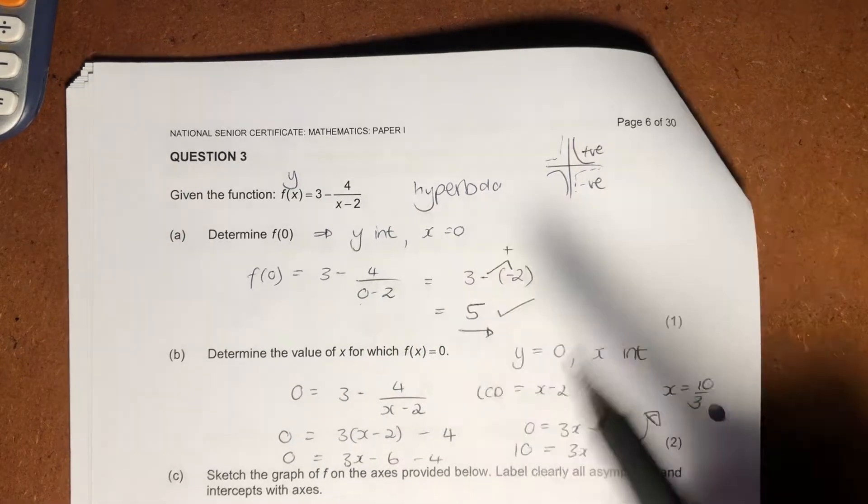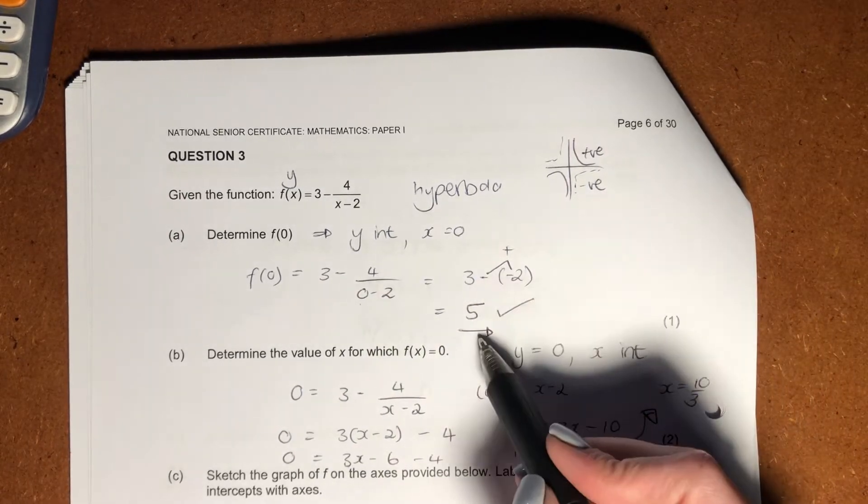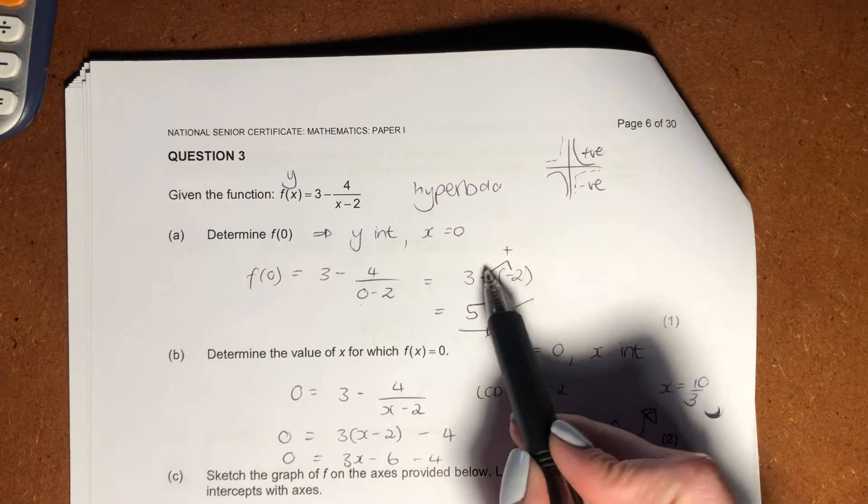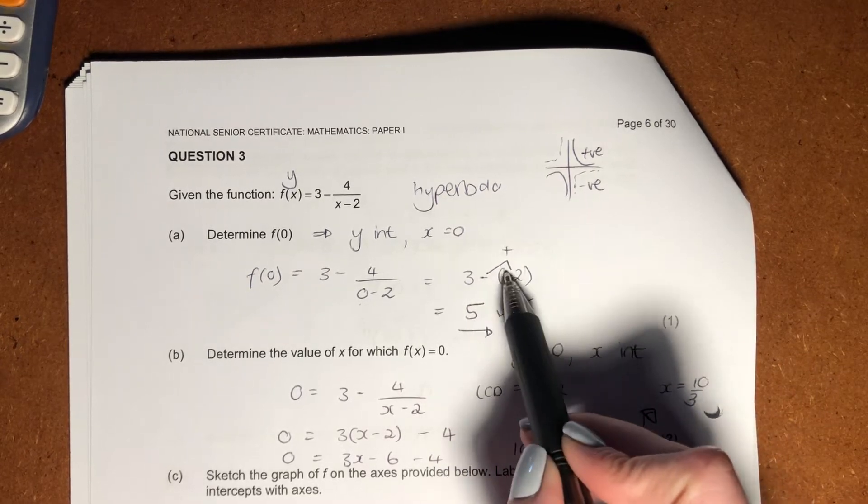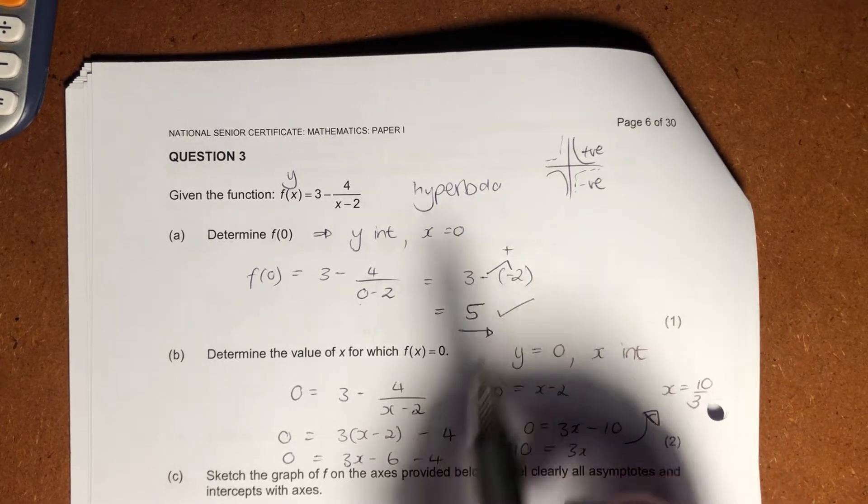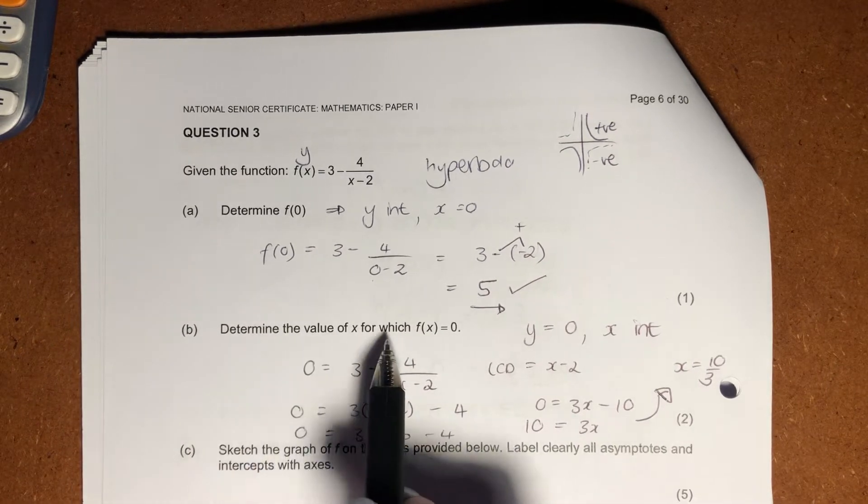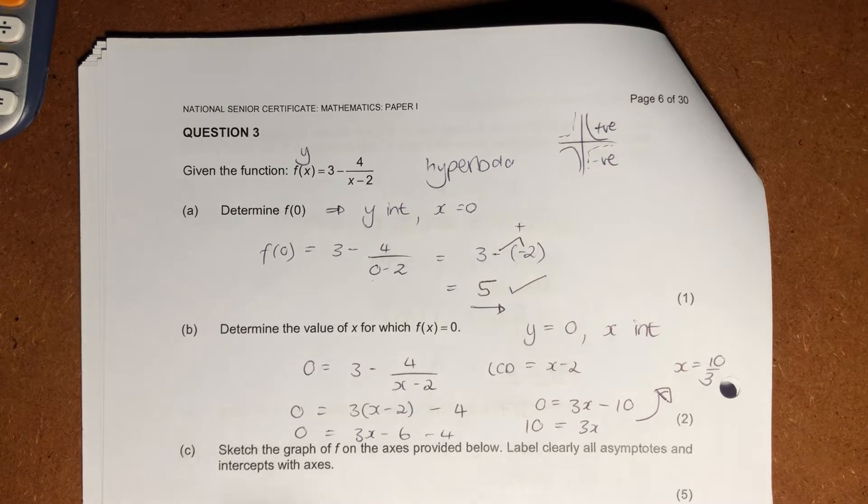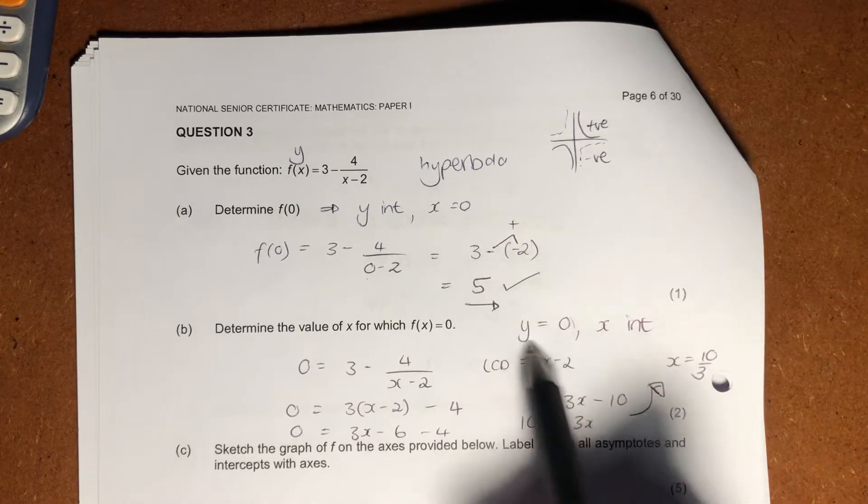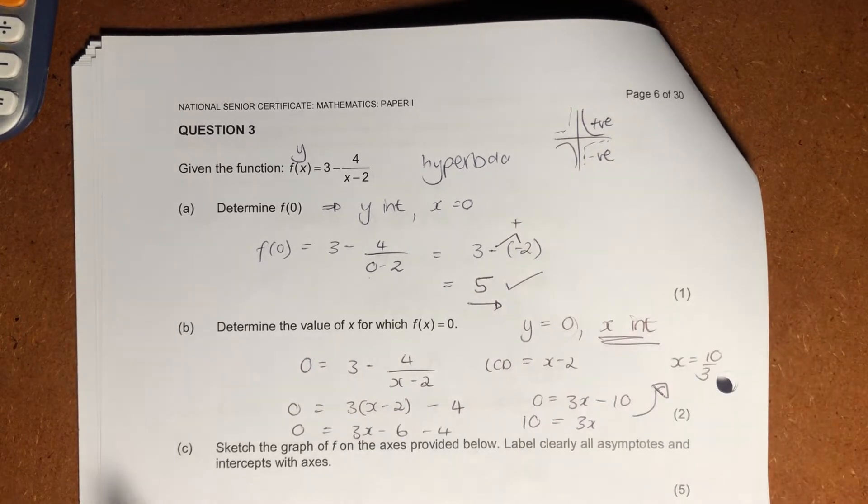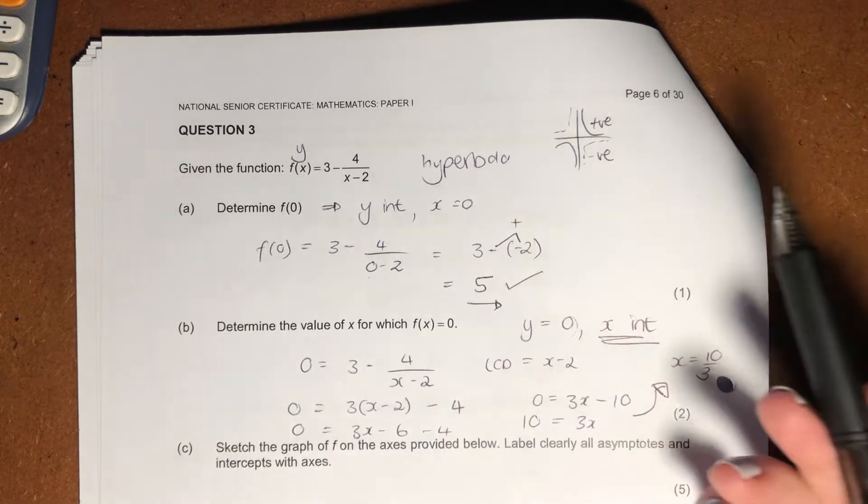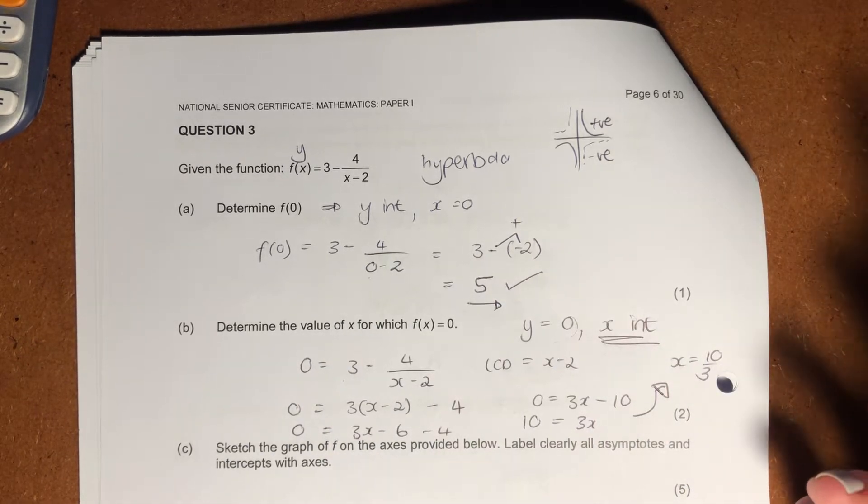Wherever you see an x, put a 0 instead, and solve. Please be careful of your signs. You get two negatives next to each other, which becomes a positive, so your answer there is 5. We then have determine the value of x for which f of x equals 0. Effectively, it's saying where y equals 0, which we know is our x-intercept. So these two questions are actually just asking us our intercepts.